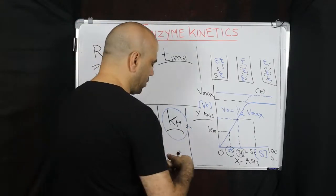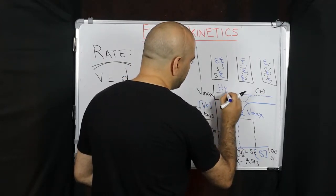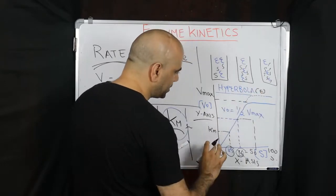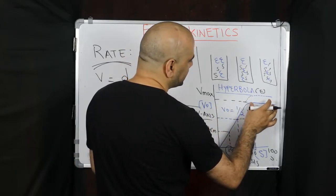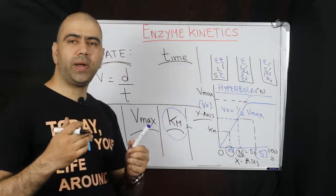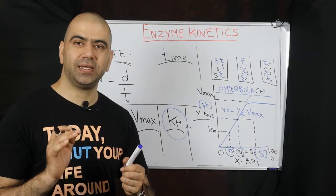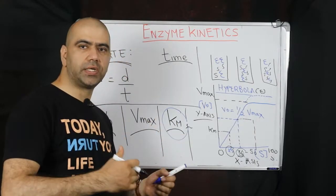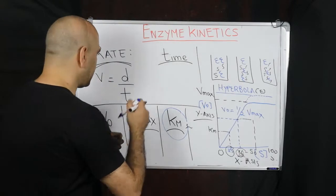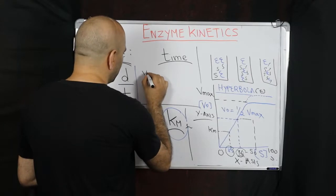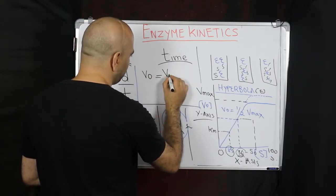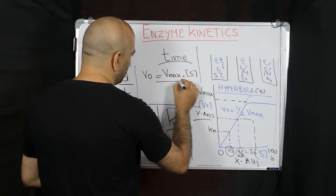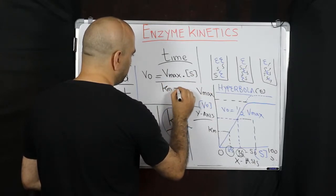When you look at this graph, we call this shape a hyperbola. What is happening is the velocity is increasing, but as the enzymes are getting saturated, it plateaus. No matter how much you increase the substrate concentration beyond that point, there will be no increase in the velocity of the reaction.